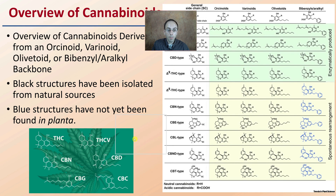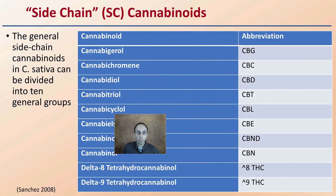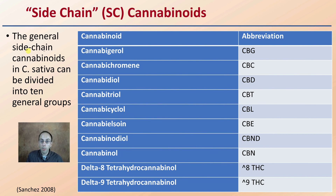Now for an overview of the cannabinoids. As mentioned, you're probably familiar with THC, CBN, CBG, CBD, and similar compounds. Cannabinoids are derived from different backbone areas. The black-outlined structures shown here have been isolated from natural sources, while the blue structures have not been found in plants — those are alcohol derivatives. Shape determines function, which is really important to understand. We also have side-chain cannabinoids, abbreviated SC cannabinoids. In general, side-chain cannabinoids of cannabis sativa can be divided into 10 general groups, including the familiar delta-9, delta-8 THC, CBD, CBC, and CBG.